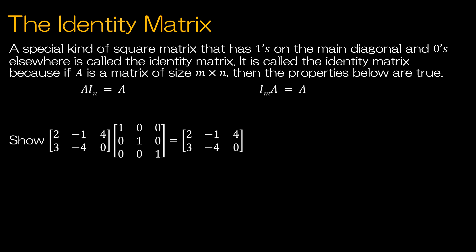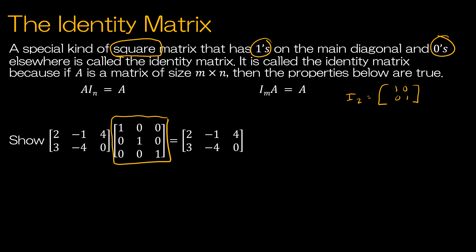Let's talk about the identity matrix. The identity matrix is a special kind of square matrix that has 1s on the main diagonal and 0s everywhere else. So I₂ would be 1, 0, 0, 1. I₃ looks just like that extended, and I₄ would be a 4 by 4 square matrix with 1s across the diagonal. The identity matrix says: if you take a matrix and multiply it by the identity matrix, you end up with the original matrix.